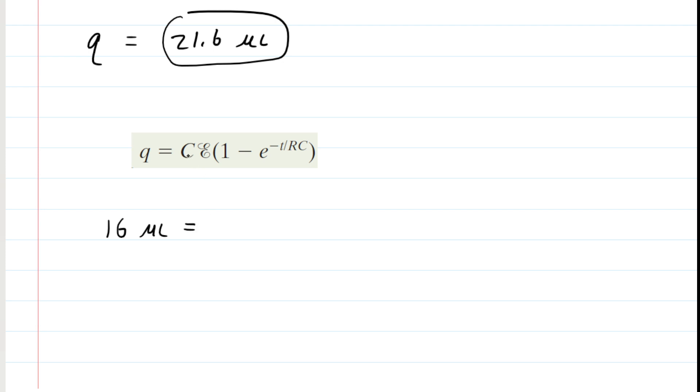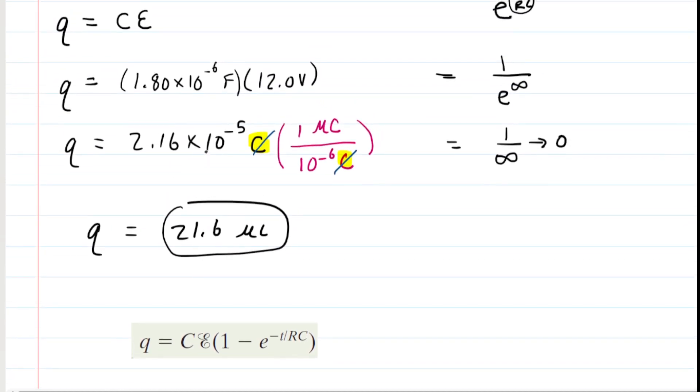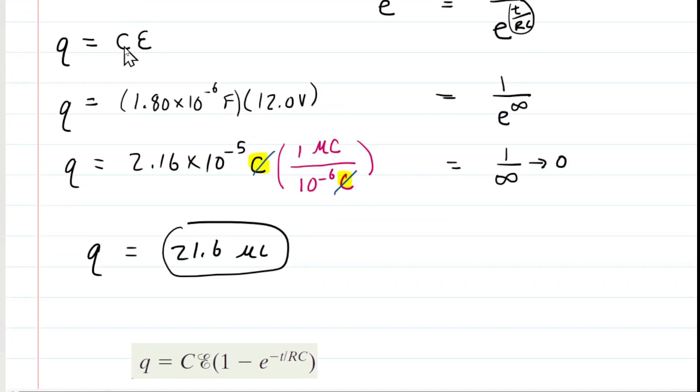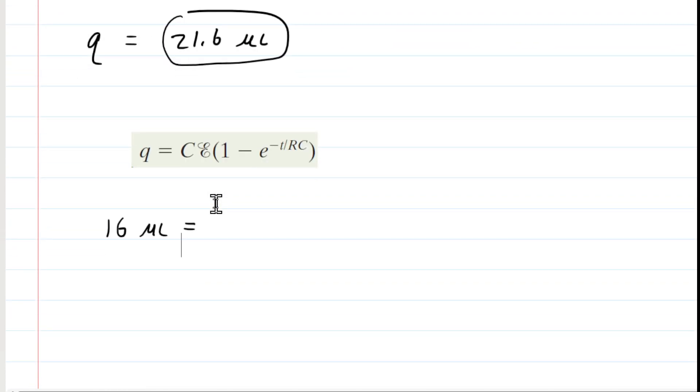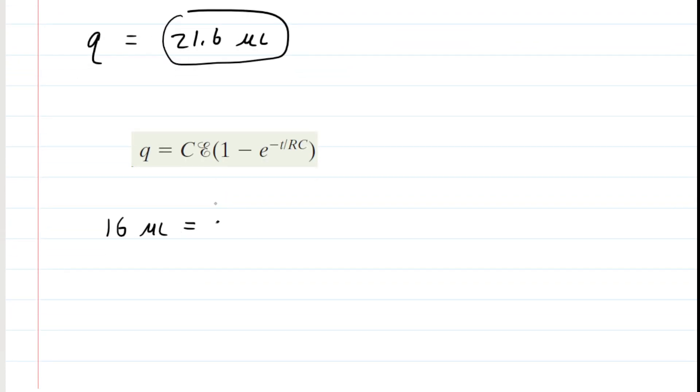Over here, capacitance times the potential difference, we just calculated that. Go back and see what we did earlier right here. We multiplied capacitance and the potential difference and got 21.6 micro coulombs. So we can fill that in for the C times E value, the whole thing, 21.6 micro coulombs. And now we have 1 minus e to the negative time over, now remember RC was the time constant. So we calculated that earlier as well. That was the 2.52 seconds. So we're going to plug that in.